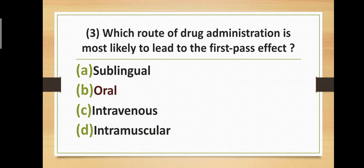Question number three: Which route of drug administration is most likely to lead to the first pass effect? Option A: sublingual. Option B: oral. Option C: intravenous. Option D: intramuscular. The correct answer is option B — oral. Oral route of drug administration is most likely to lead to the first pass effect.